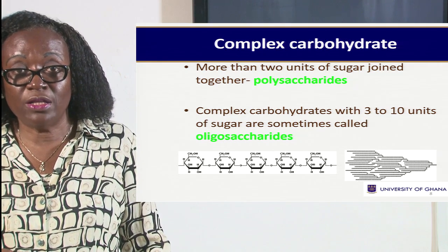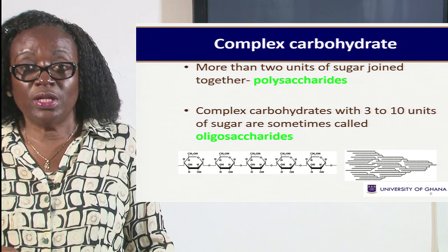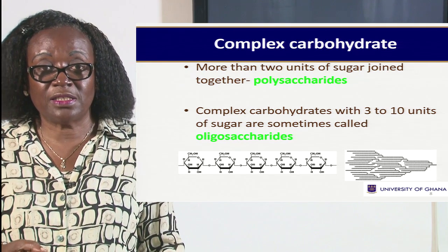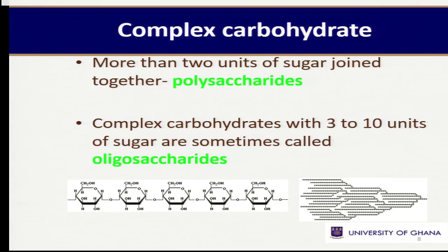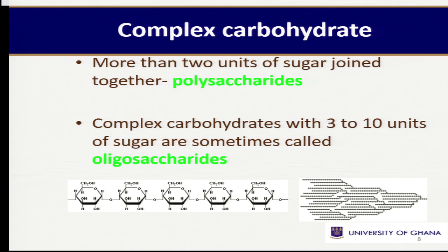Now with the complex carbohydrates, we have the starches. So when we eat cassava, yam, rice — it's made up of complex carbohydrates, which is also known as polysaccharides. You may come across polysaccharides in tests — it's the same as complex carbohydrates.